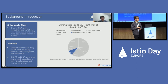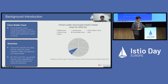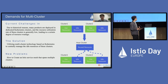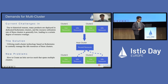In addition, we have integrated Istio into our operations platform, Weco OPS, and the cloud native platform, Weco CMP, to provide service mesh capabilities for internal products and external clients. With the development of China Mobile Cloud, we have encountered the demand for using multi-cluster, which has also brought new challenges.